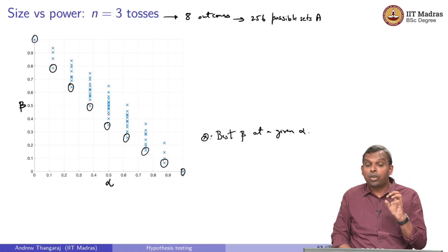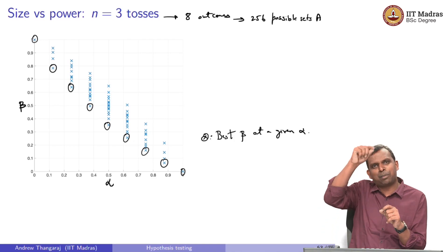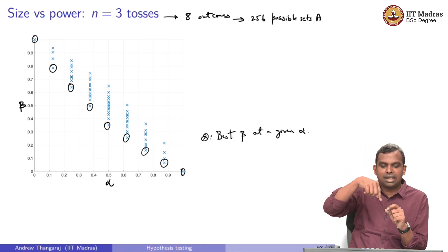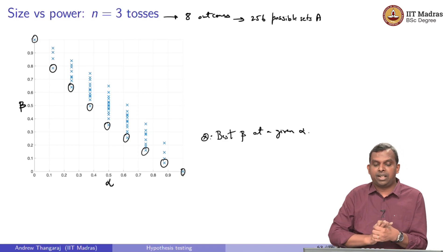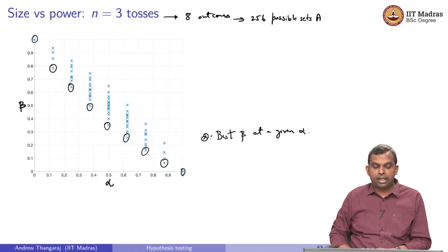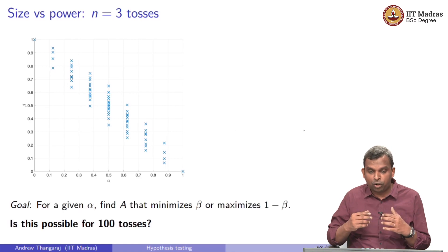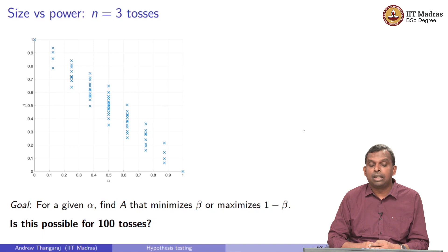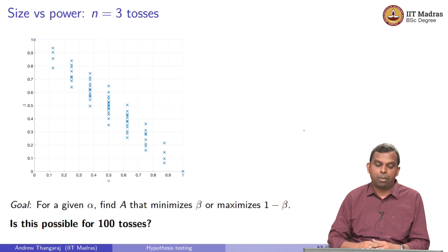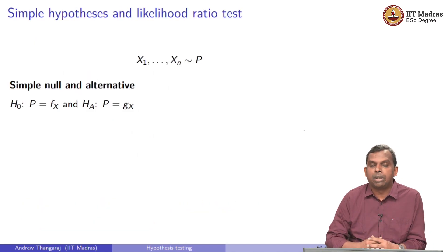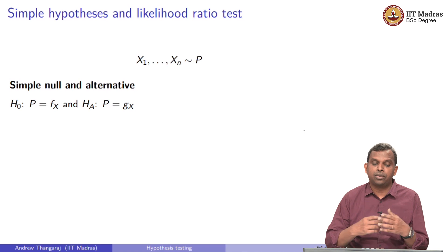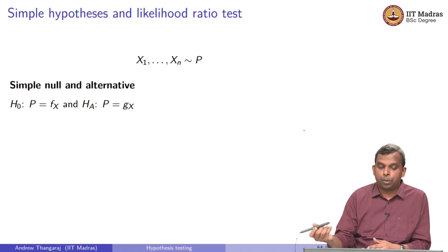The question is: suppose you do 100 tosses — can you quickly identify the best acceptance sets? For a given alpha, find the acceptance set A that minimizes beta or maximizes 1 minus beta, and it should be possible for a large number of tosses. That is the basic problem here, and it is solved by the likelihood ratio test, which requires simple hypotheses.